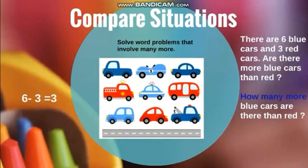Are there more blue cars than red? This is what we mean by comparing situations. Yes, there are more blue cars than red cars because six is more than three. But how many more blue cars do we have than red cars? The phrase 'how many more' means we need to use subtraction. Since we have six blue cars, we do six minus three red cars, which equals three. So we have three more blue cars than red cars. In this way, we compared the number of blue cars to the number of red cars.